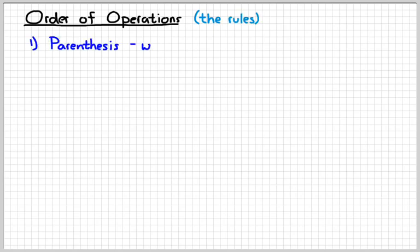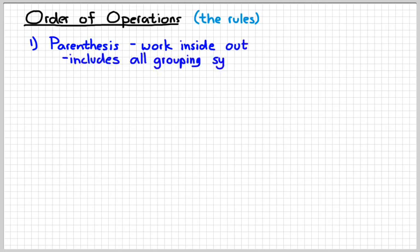So the rules are your order of operations. And we should sort of kind of have this in our brains. Start working inside out from the parentheses. Now parentheses includes any and all grouping symbols. Parentheses, brackets, fraction bars, and square root signs are all examples of grouping symbols. You do those first from the inside out.